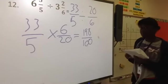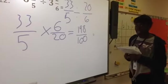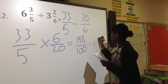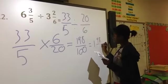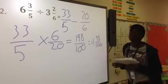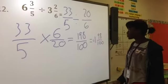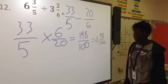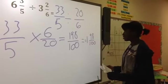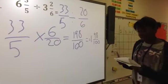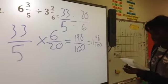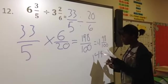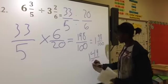And can I leave my answer like that? No. What do you have to do? I have to change it. So that would equal to 1 and 98, 100. Can you explain where you got 1 and 98 over 100? Like, what did you do to get that? 100 goes into 198 ones, and there's 98 left. Perfect. Are we finished now? No. Because we have to simplify it. And that is 1 and 49 over 50. Perfect. Nice job.